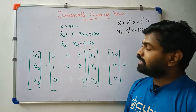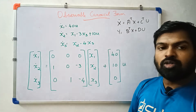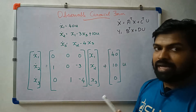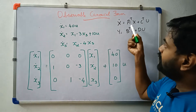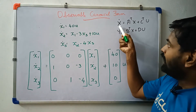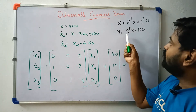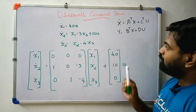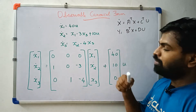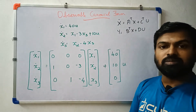This is the canonical form. The state equation is derived. Now let's compare with the controllable canonical form. The observable canonical form uses A transpose, C transpose, and B transpose, where x dot equals A-transpose x plus C-transpose u and y equals B-transpose x plus du. Let's look at the A matrix and B matrix.